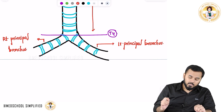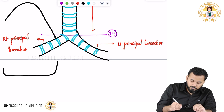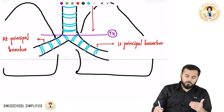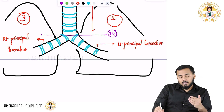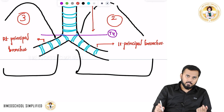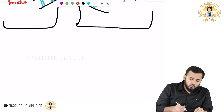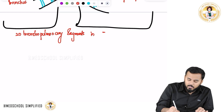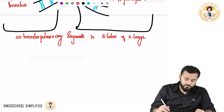After the trachea, the right and left main bronchi enter the lungs. The right lung has 3 lobes and the left lung has 2 lobes. The right lung has 10 bronchopulmonary segments and the left lung also has 10, giving a total of 20 bronchopulmonary segments across 5 lobes of 2 lungs. This is important to know for your exams.